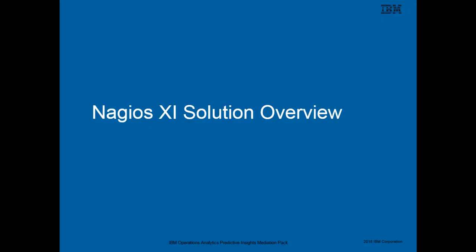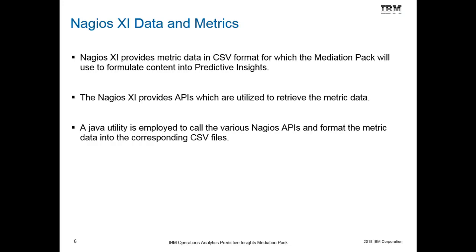We will now discuss the Nagios XI solution overview, which includes the topics of the source of the metrics to be ingested by Predictive Insights. The Nagios XI provides metrics by API calls. The Mediation Pack Java utility uses the API calls to retrieve the metrics and then writes the metrics into CSV formatted files. Predictive Insights is then configured to pull in the content from the CSV files.